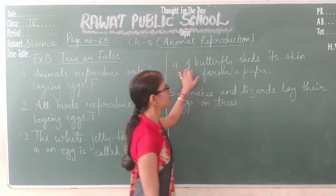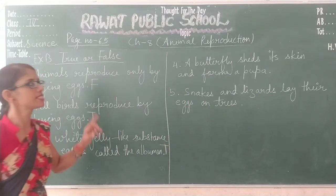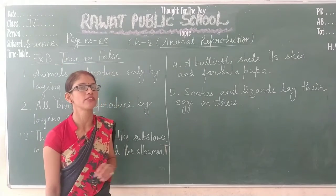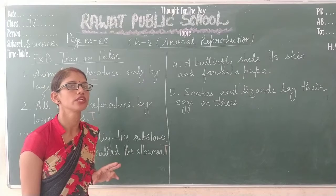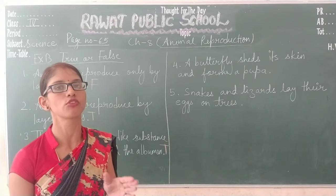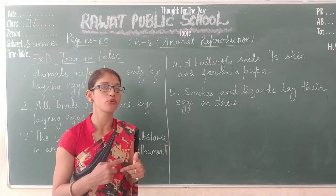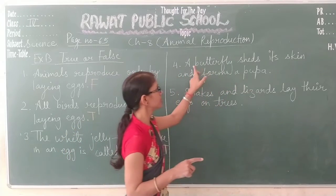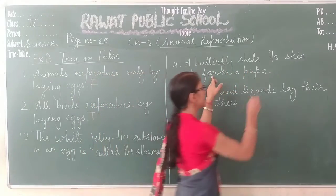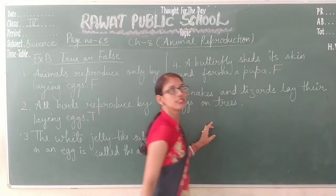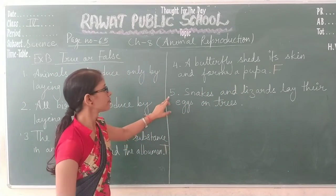Statement 4: a butterfly sheds its skin and forms a pupa. This statement is false. In the life cycle of the butterfly, after incubation the egg hatches into a small worm-like structure called the caterpillar. It is the caterpillar that forms a protective covering around itself, which is known as the pupa. The butterfly does not shed its skin to form a pupa — it is the caterpillar that forms the pupa. So we write F for this statement.